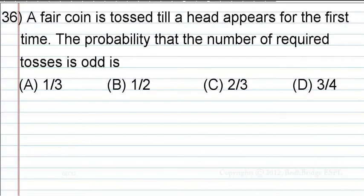A fair coin is tossed till a head appears for the first time. The probability that the number of required tosses is odd is: The options are 1/3, 1/2, 2/3, and 3/4.